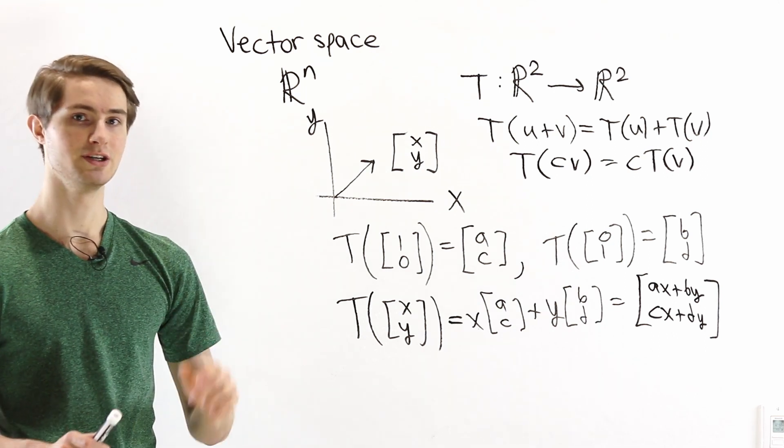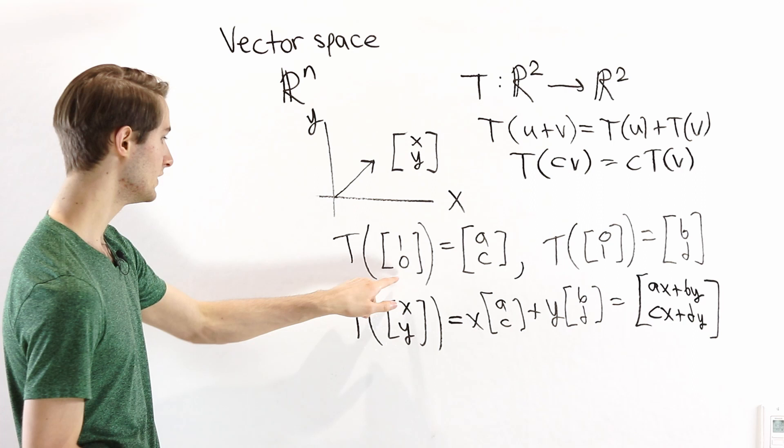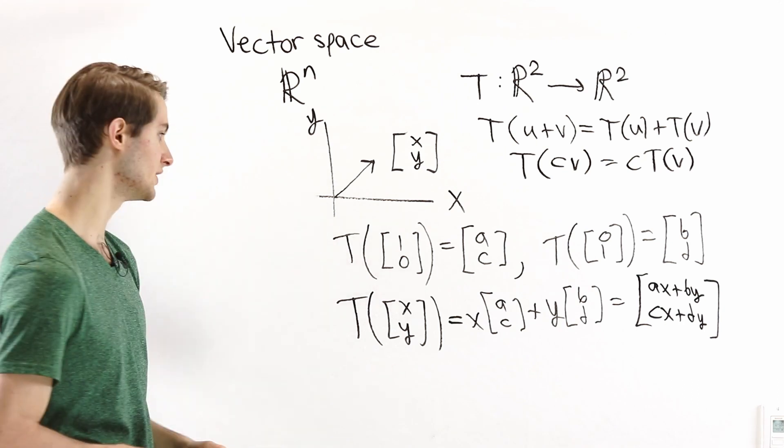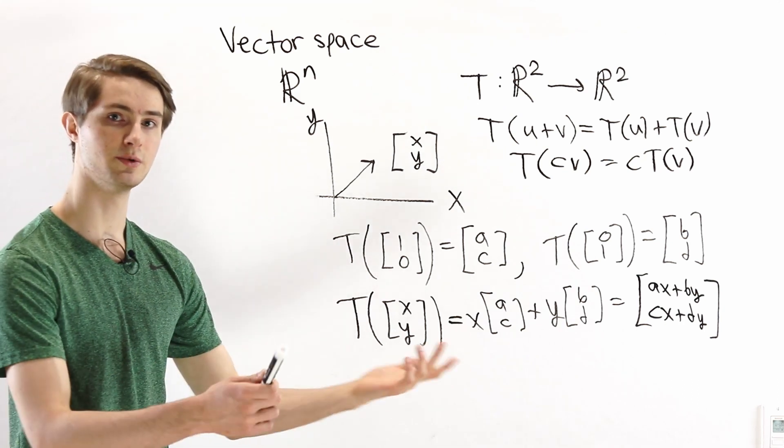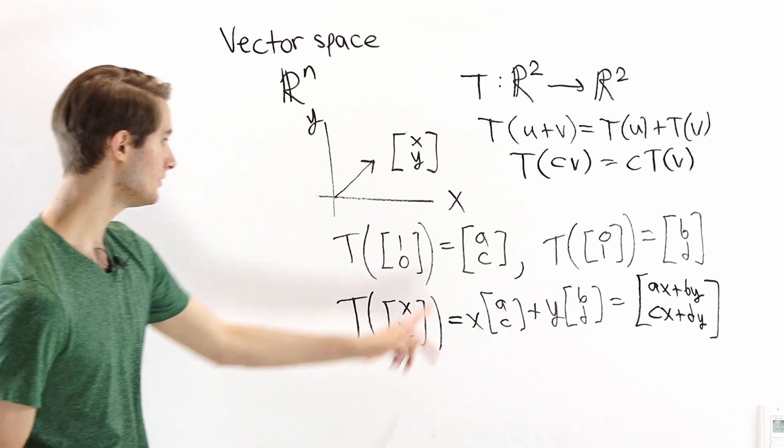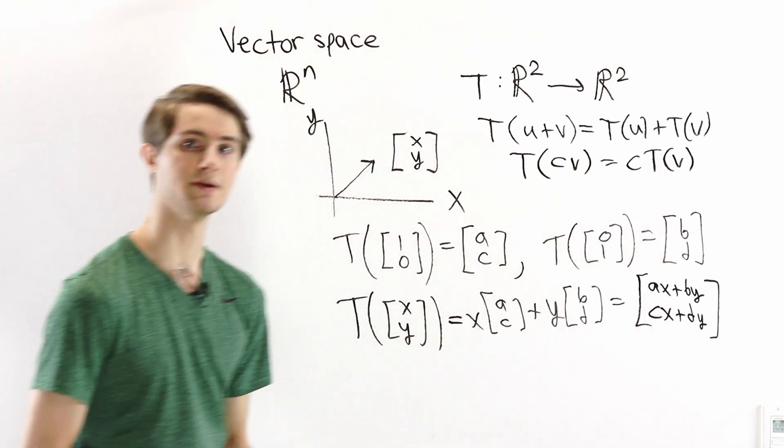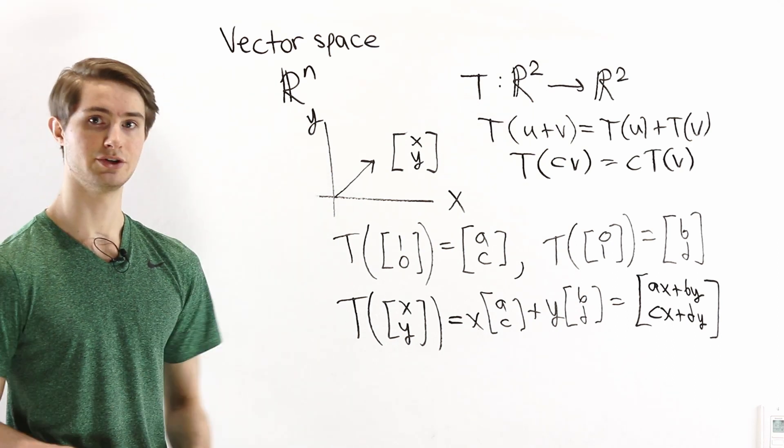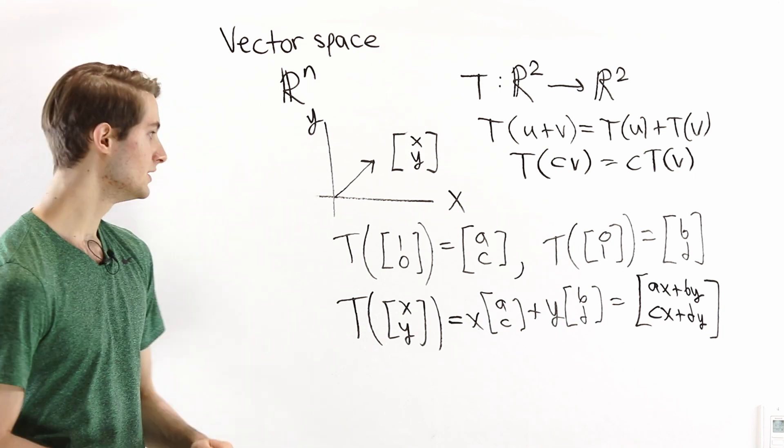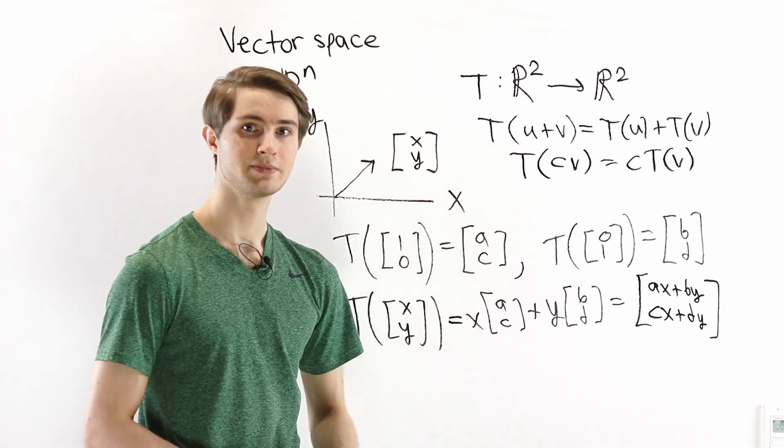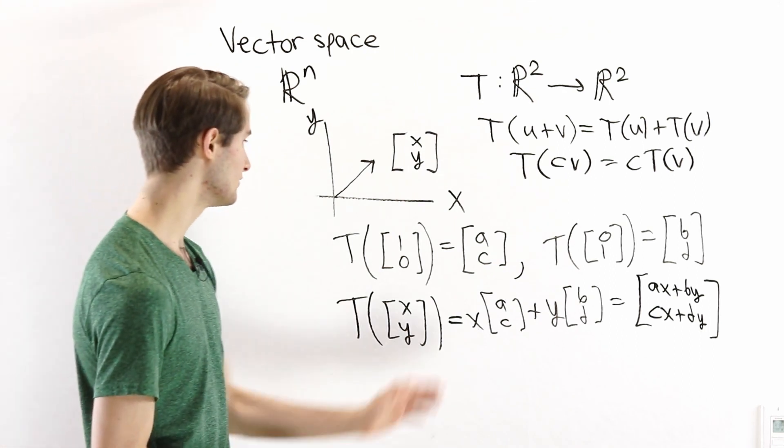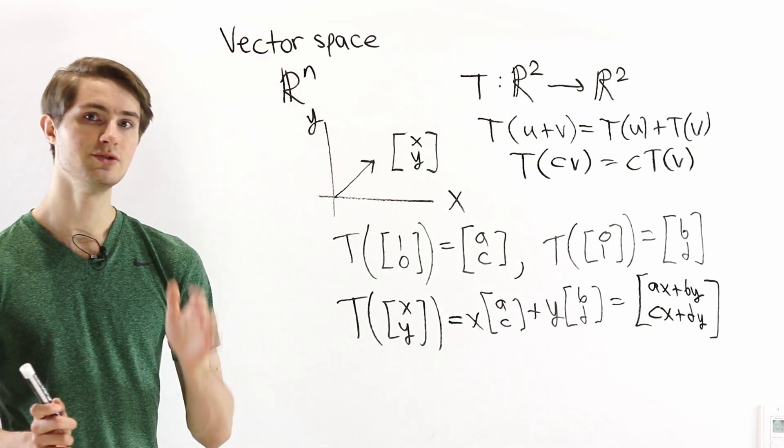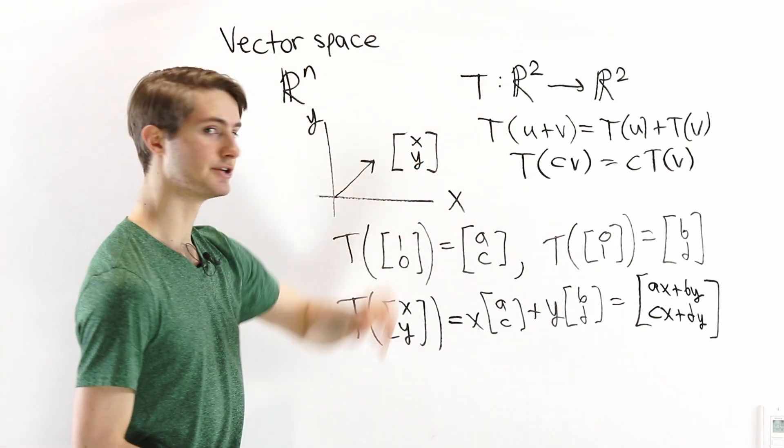So we just showed that a linear transformation is completely determined by where it sends 1, 0 and 0, 1. So if we were talking to someone else about this linear transformation, all we would need to do to tell them what the function was, is to tell them the value a, c and the value b, d, and then they would be able to figure out everything else. So if we want to write down a linear transformation, really the easiest way to do it is just to list these values.